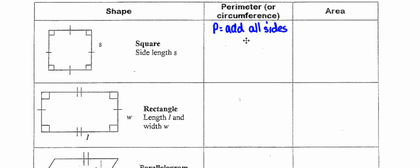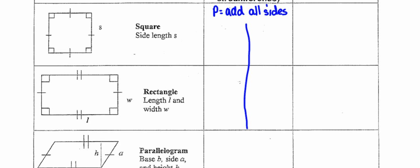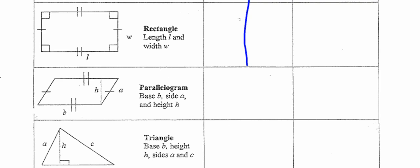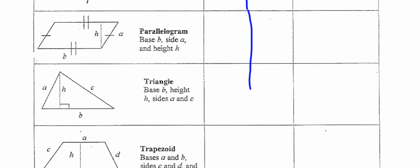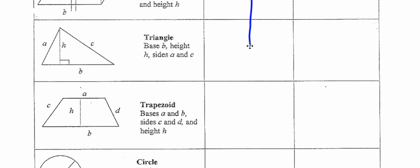So for the square, we're going to add all the sides. For the rectangle, we're going to find perimeter by adding the length of all its sides. For the parallelogram and the triangle, find perimeter by adding the length of all of its sides. And then lastly, for the trapezoid, it too will find perimeter by adding the length of all of its sides.